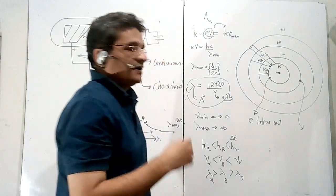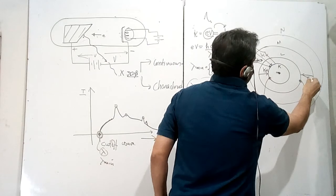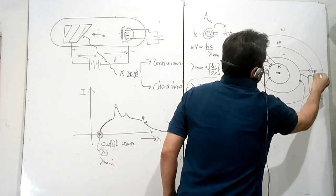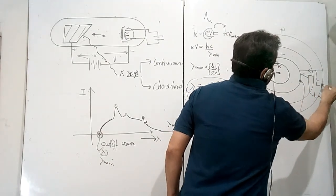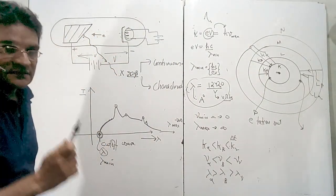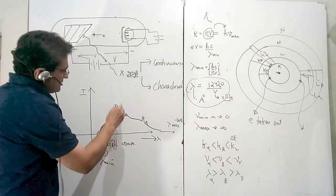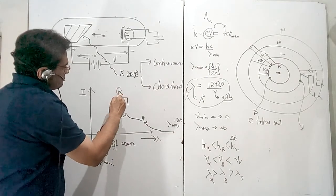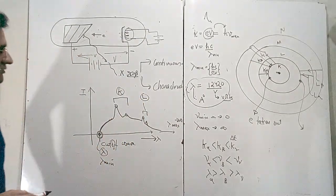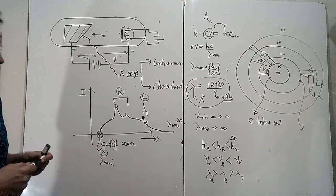In case the electron is knocked off from the L shell, then you have L alpha, L beta, and L gamma lines. If the electron comes from the N shell it gives L alpha; from the next shell it gives L beta, and so on. So you can have L alpha, L beta, L gamma as characteristic frequencies or wavelengths. These are the peaks: one group will be the K series and another group will be the L series.